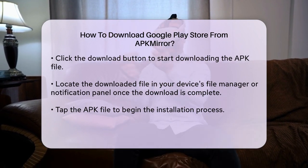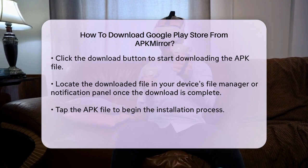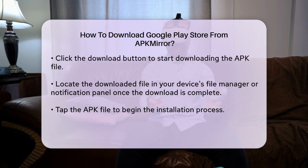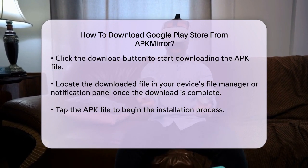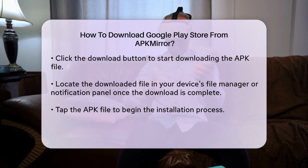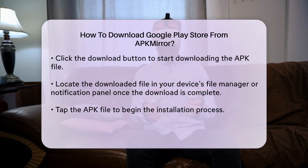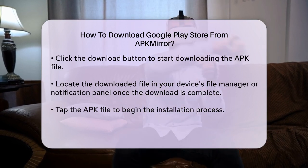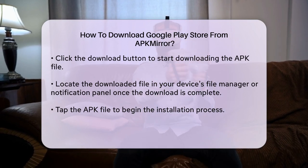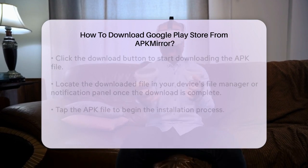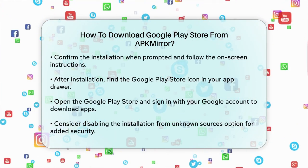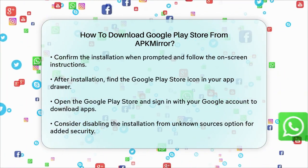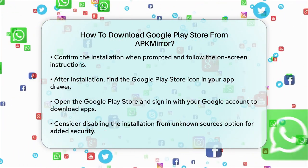Now, tap on the downloaded APK file to initiate the installation process. You may be prompted to confirm that you want to install the application. Follow the on-screen instructions to complete the installation. After the installation is finished, you should find the Google Play Store icon in your app drawer.